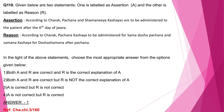Question number 110: Assertion — according to Charaka, Pachana and Shamaniya Kashayas are to be administered to the patient after the sixth day of Jwara. Reason — Pachana Kashaya is for Aama Dosha Pachana and Shamana Kashaya for Dosha Shamana after Pachana. Both assertion and reason are correct and reason is the correct explanation. The Shloka states: Pachanam Shamaniyam Va Kashayam Payayet Bhishak Jvaridam Shadahe Adhike Laghu Anna Pradhi Bojitam. Pachana Kashaya is given for Aama Dosha Pachana and Shamanakashaya for Pakva Dosha Shamana.